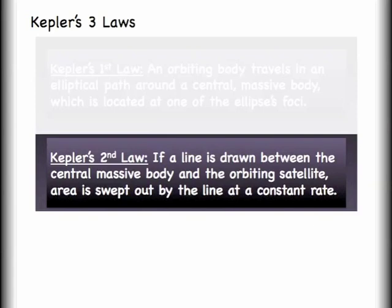We'll come back now to start looking at Kepler's second law. This one is a little bit complicated to put into words. It's much easier to see what's going on in a picture. I'm going to go ahead and read this little blurb for you. If a line is drawn between the central massive body and an orbiting satellite, area is swept out by the line at a constant rate. So let's see what I mean by that.